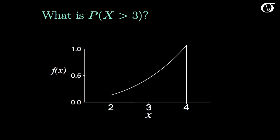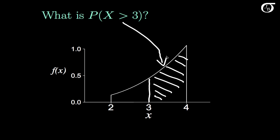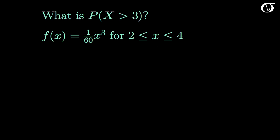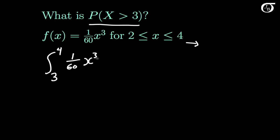Suppose we want to find the probability the random variable x takes on a value greater than 3. For continuous probability distributions, probabilities are simply areas under the curve. So the probability that x is greater than 3 is simply the area under the curve to the right of 3, and we can find that area using integration. Note that the probability density function drops to 0 beyond 4, so x cannot take on values greater than 4. Therefore we integrate from 3 to 4: the integral of (1/60) times x cubed dx.